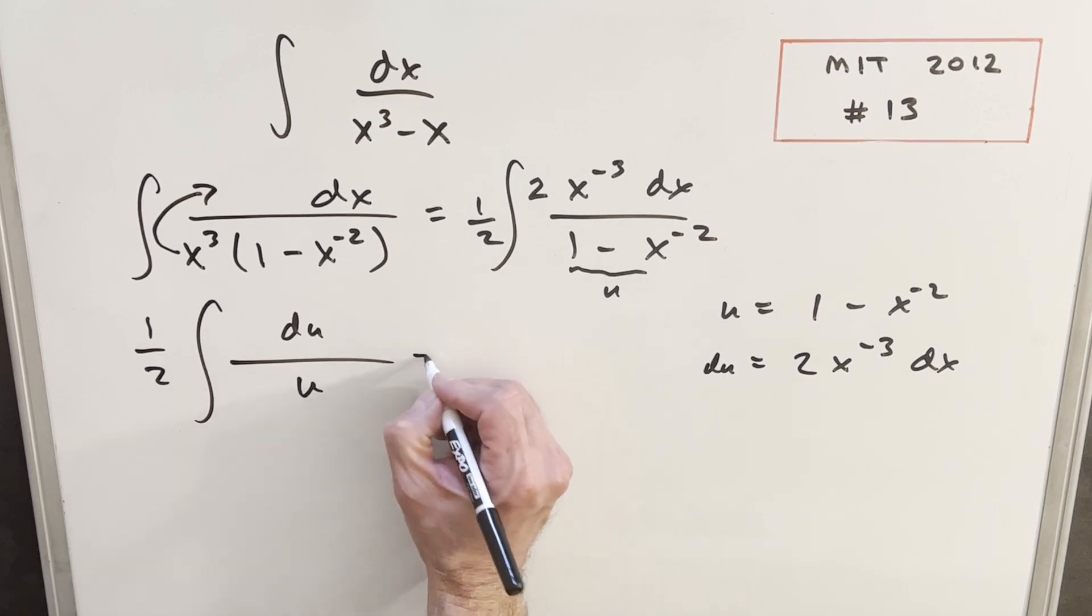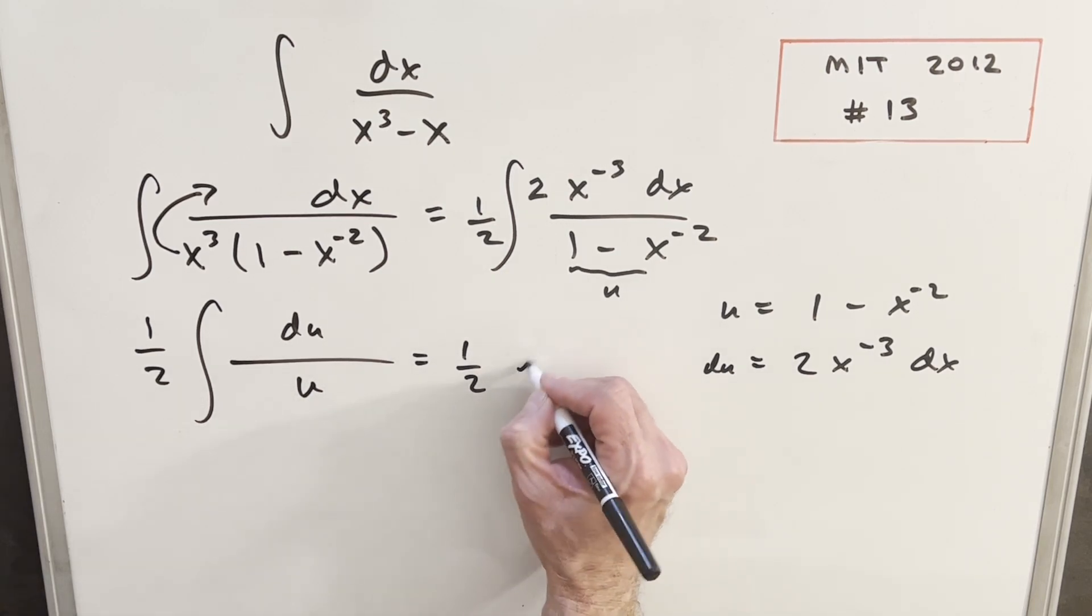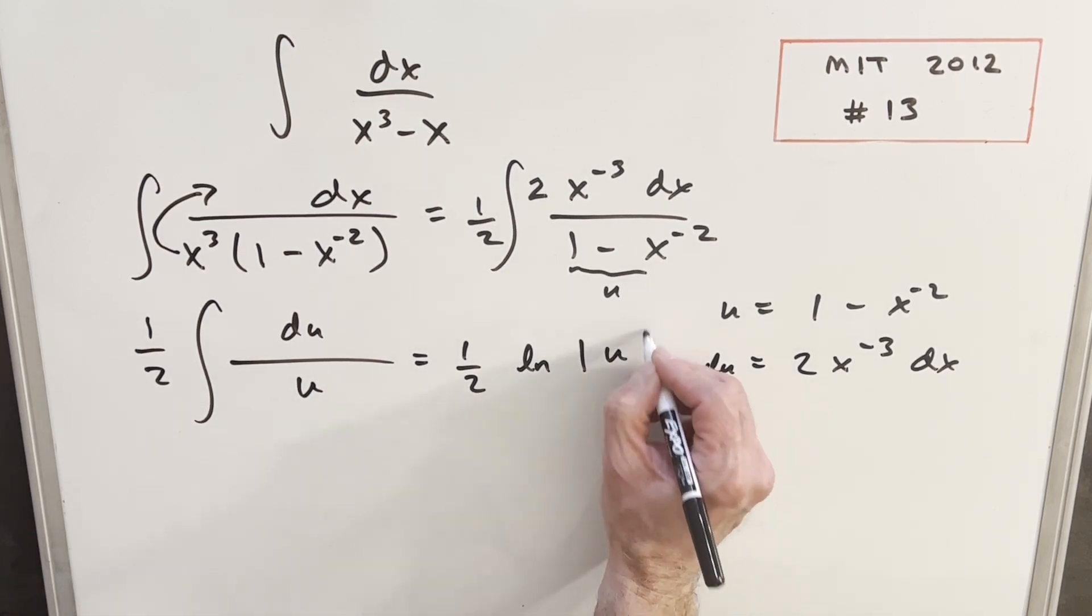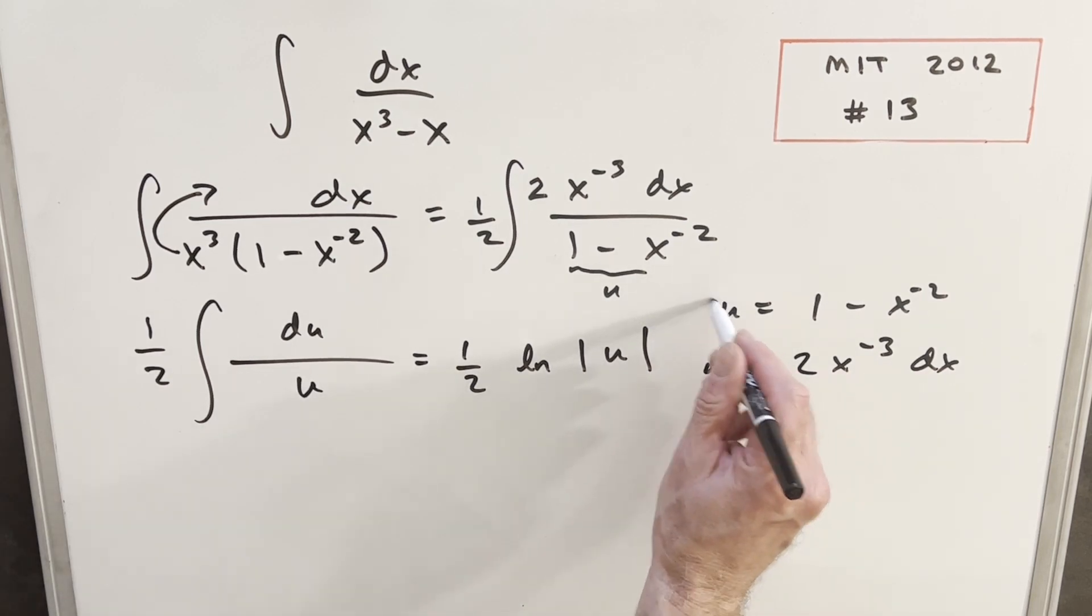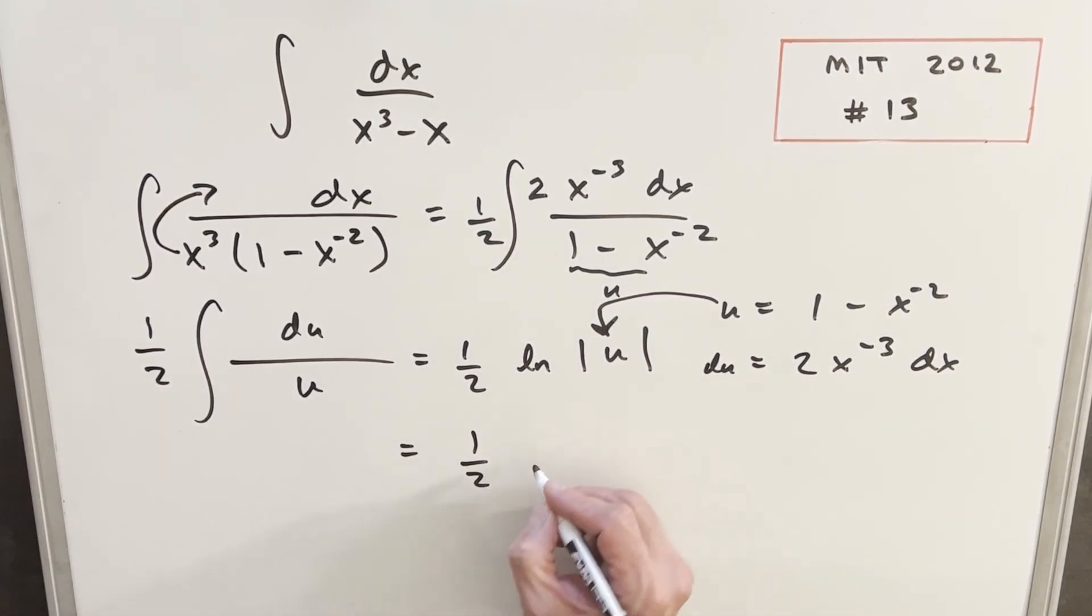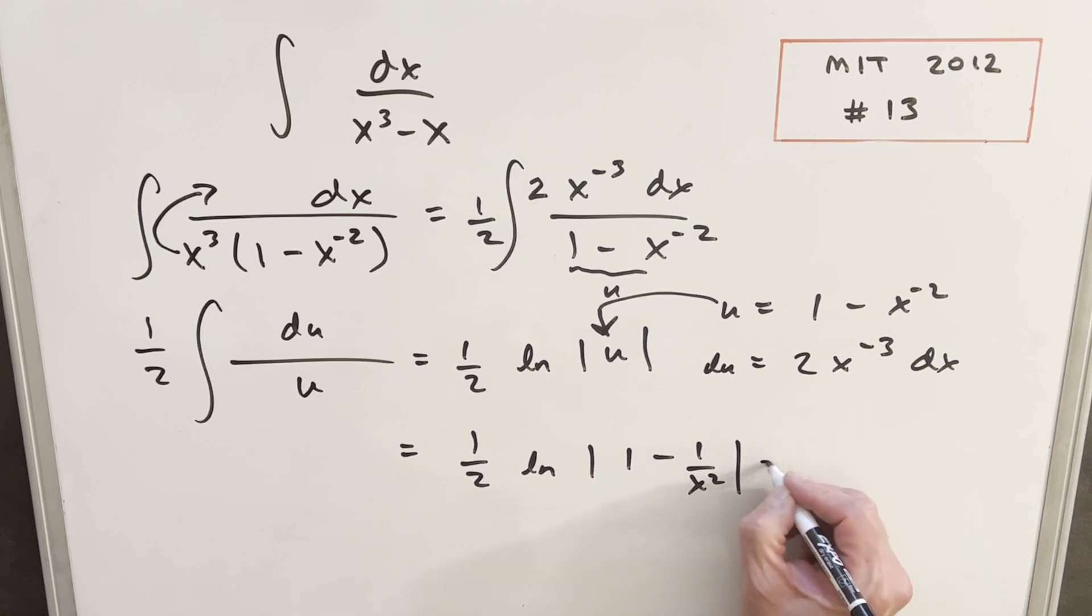And then very common integral here, right? Du over u is just going to be natural log absolute value u. We're going to back substitute here. For our final solution, I'm just going to write this. We'll have one-half natural log absolute value 1 minus, I'll write this as 1 over x squared, plus c.